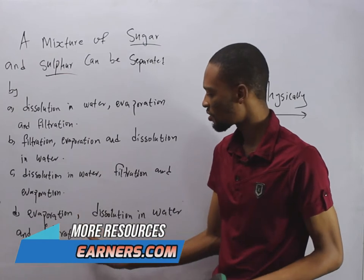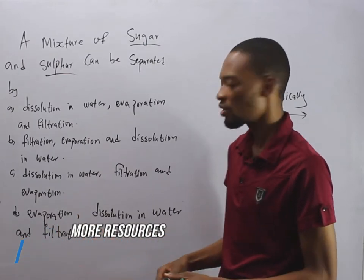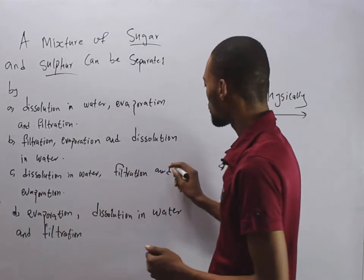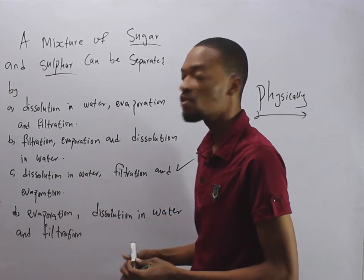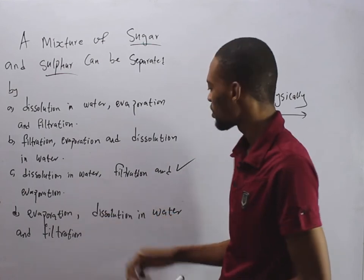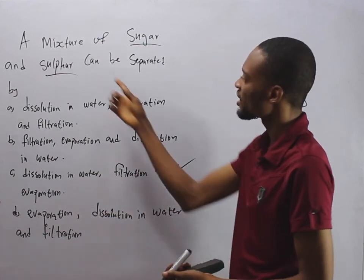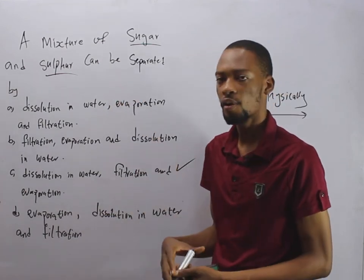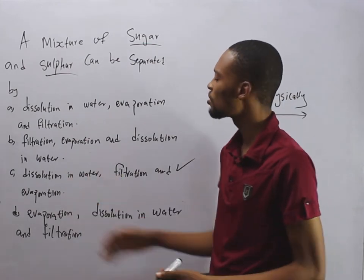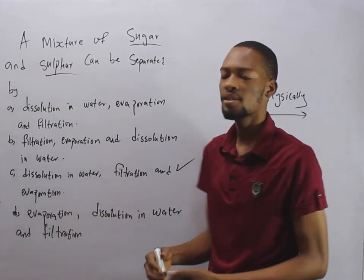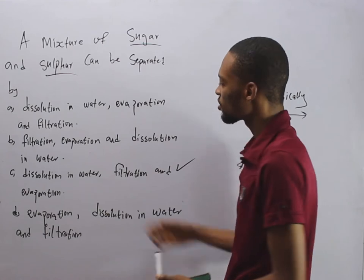To separate water and sugar, we simply heat and evaporate so that the water evaporates, leaving behind the sugar. So evaporation alone first is obviously wrong. The correct answer is: dissolve in water so the sugar dissolves, filter to get your sulfur, then use evaporation to separate the water and sugar.